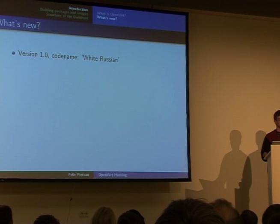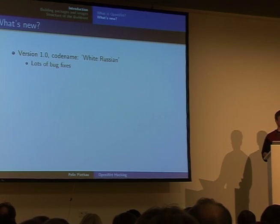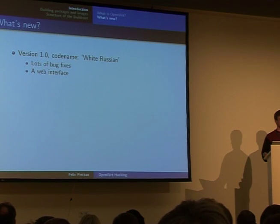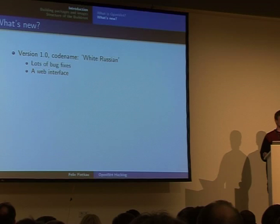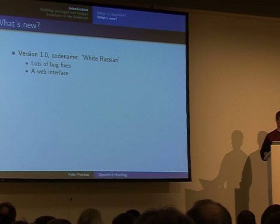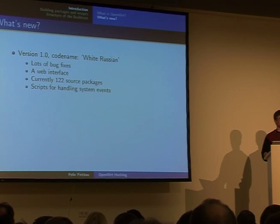What's new in OpenWRT development? Our version 1.0, codenamed White Russian, has lots of bug fixes over time. It's not quite there yet — maybe in a few weeks we'll release another release candidate. The main new thing that happened recently is we finally got a web interface. We currently have 122 source packages in our repository, quite a lot of software, and the new version is going to offer even more.